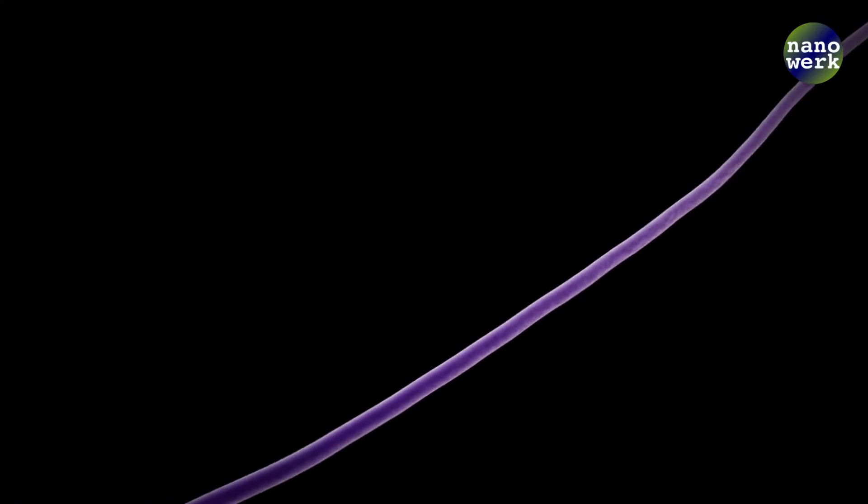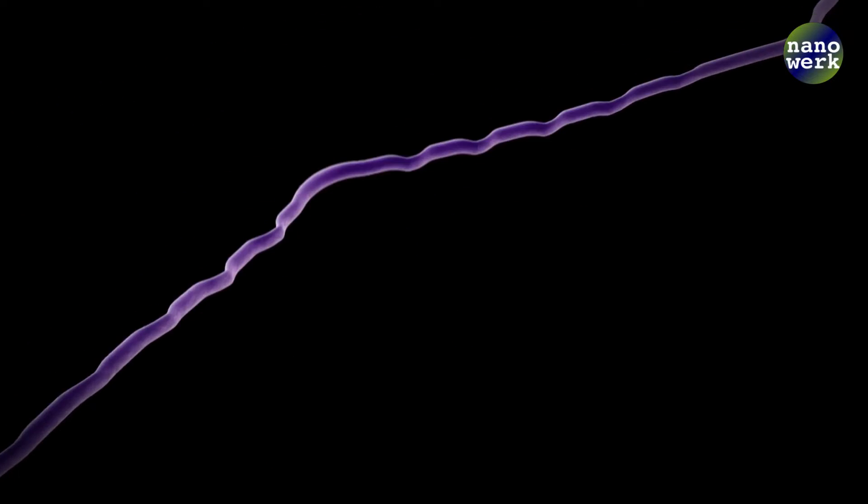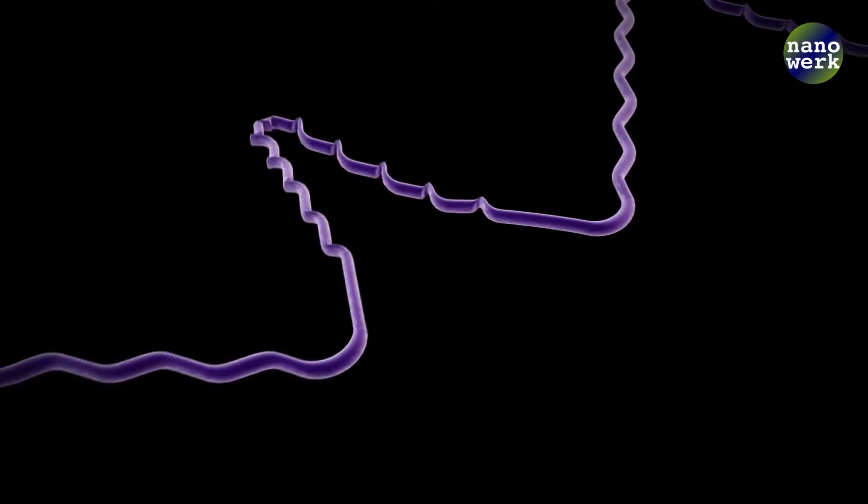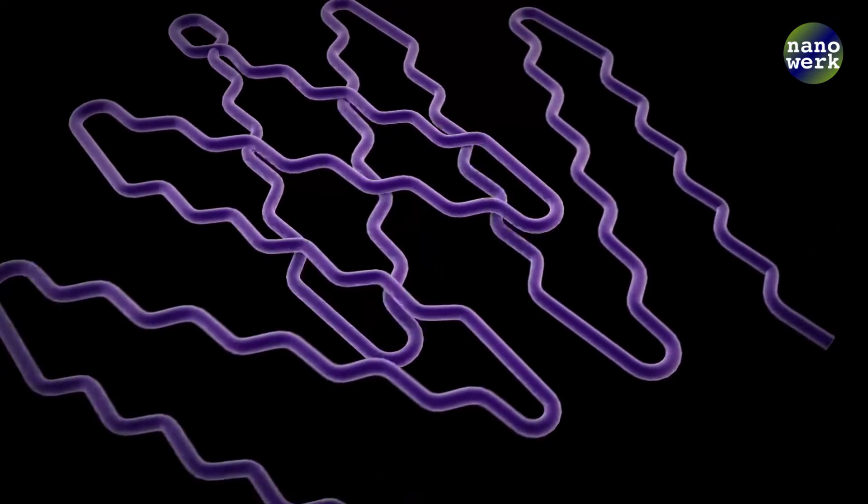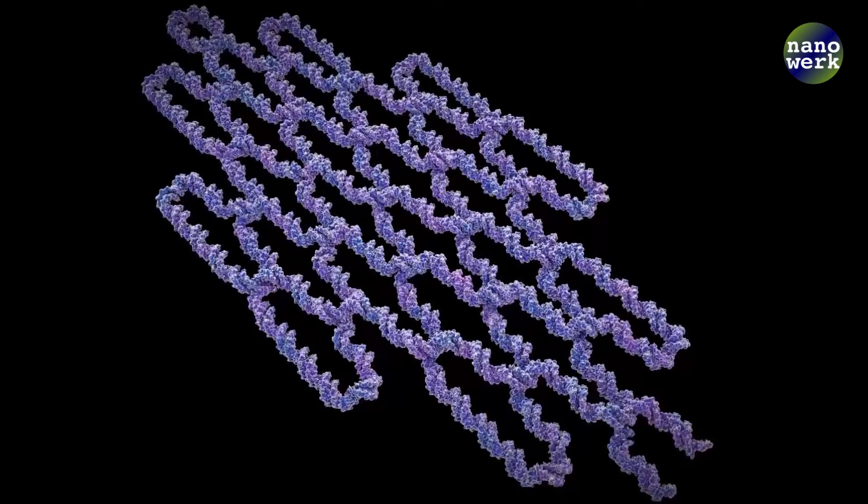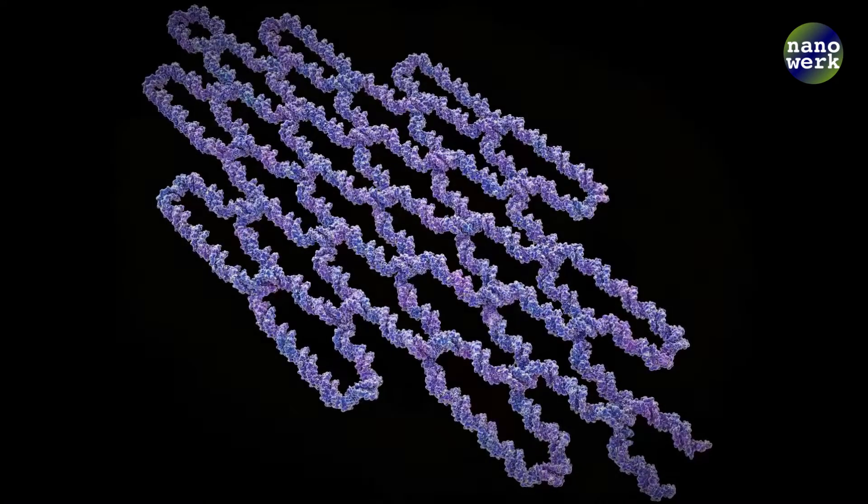But instead of paper, scientists use DNA molecules—the stuff our genes are made of. They take a single long strand of DNA and fold it, creating any shape they design, like a microscopic box.